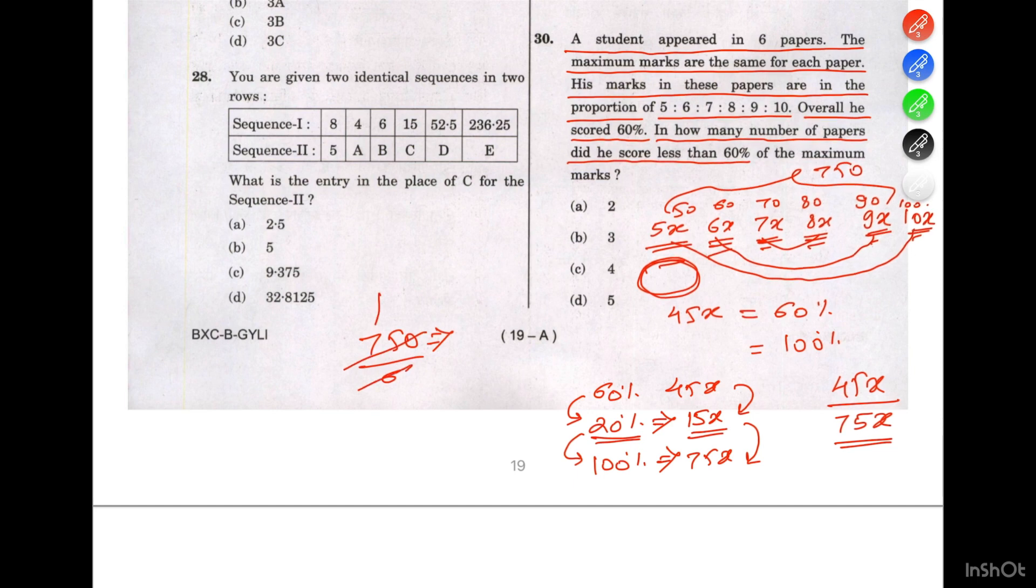750 divided by 6 equals 6 goes into 15 twice, 6 goes into 30 five times, so 125. The maximum score in one exam can be 125.